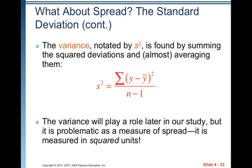The variance, noted by S squared, is found by summing the squared deviations and almost averaging them. S squared, the variance, is equal to the sum of the deviations squared — because each deviation is each observation Y minus the mean. So Y minus Y-bar is the deviation, and then you square them so that they don't add up to zero when you add.